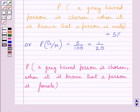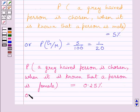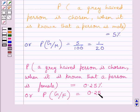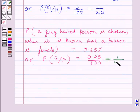We are also given that probability that a grey haired person is chosen when it is known that the person is female is equal to 0.25%. So probability of event G given event F has already occurred is equal to 0.25/100. We can write 0.25% as 0.25/100, which is further equal to 1/400.